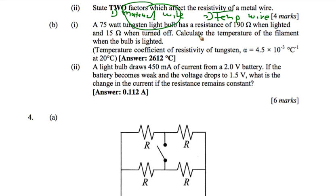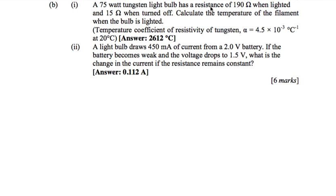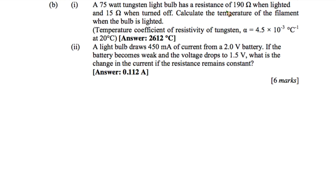Part B: understand the light bulb as a resistance. The power is given, and the resistance is 190 ohm when the light is on and 50 ohm when it is turned off. We have two situations — when the light bulb is turned on and turned off — and we need to calculate the temperature of the filament when the bulb is lighted.